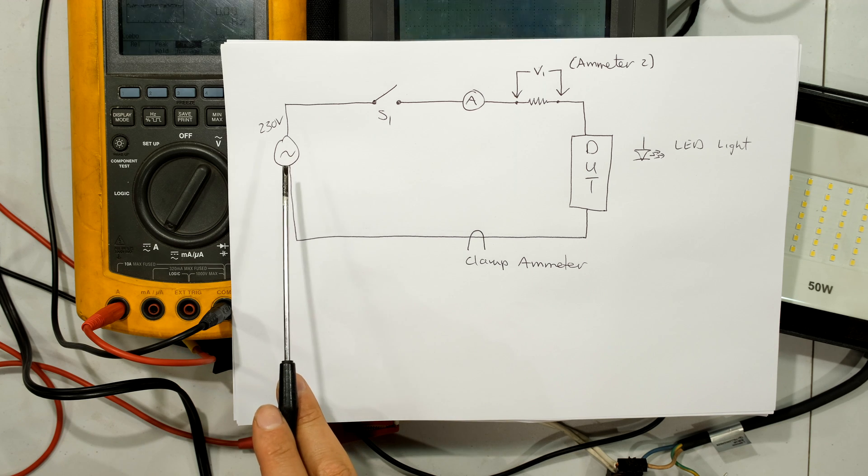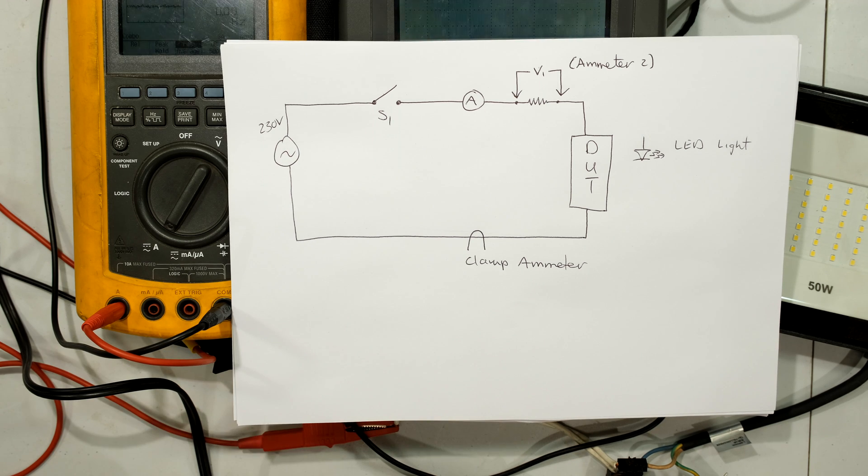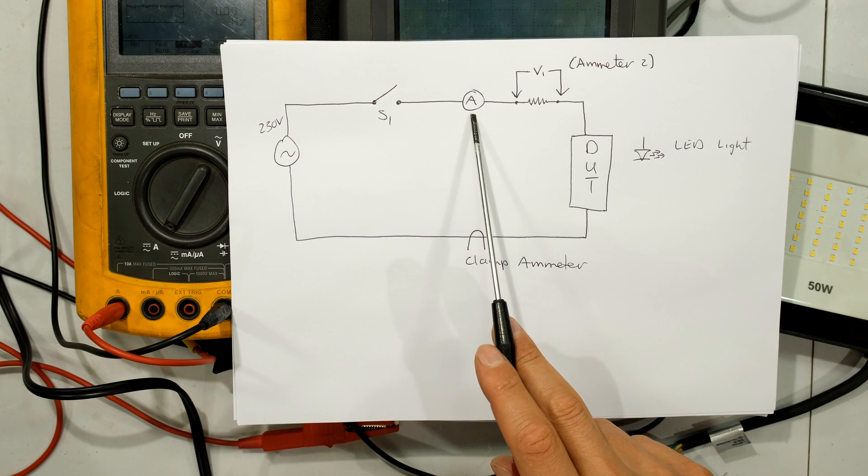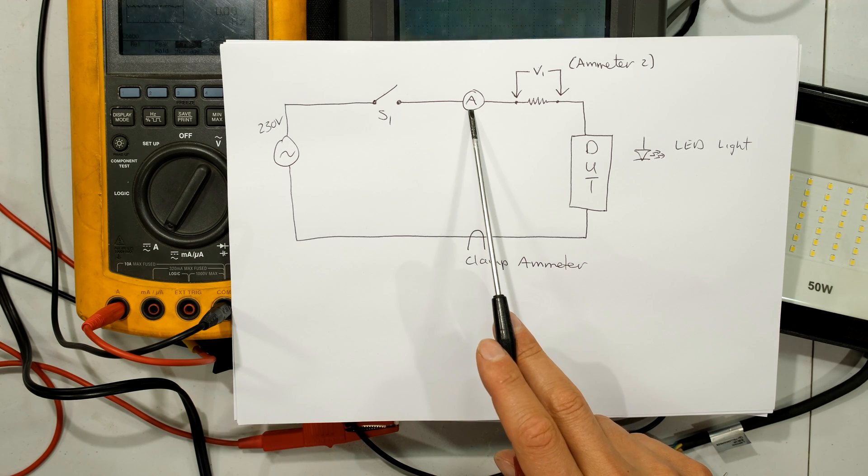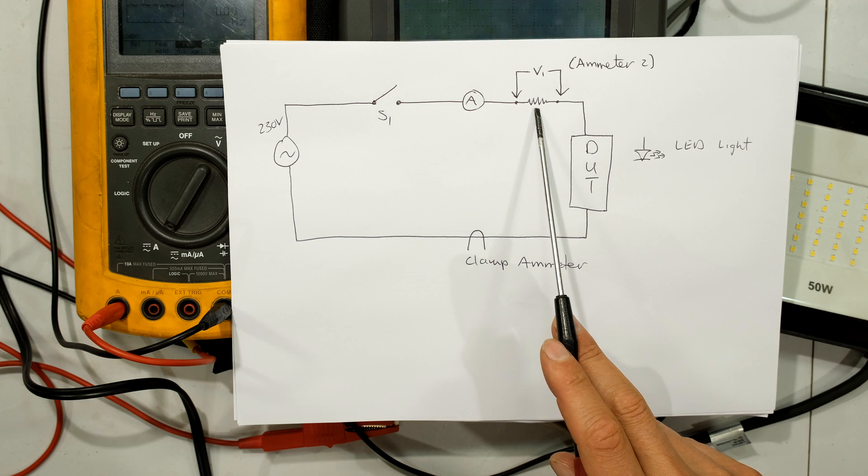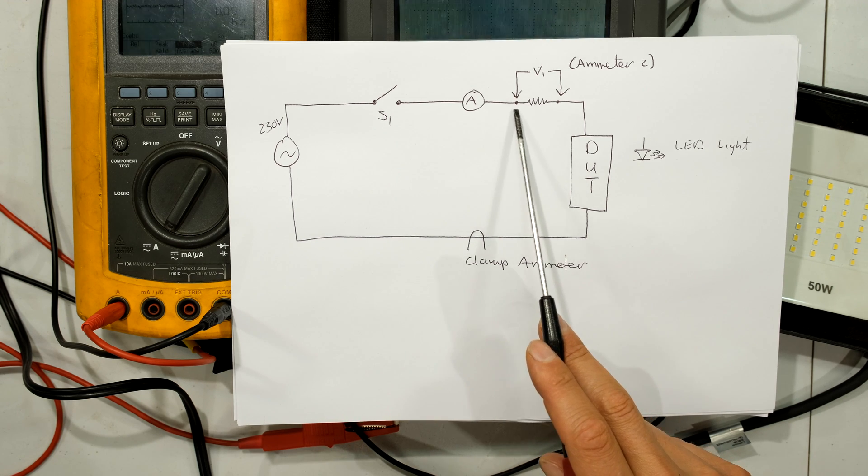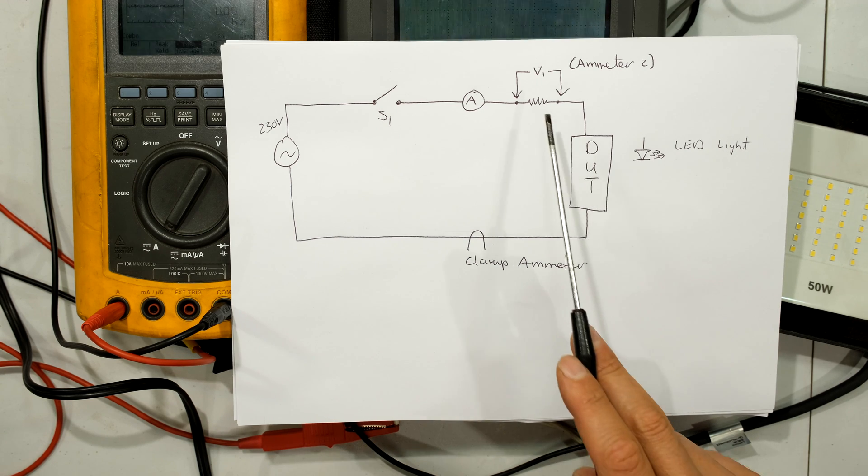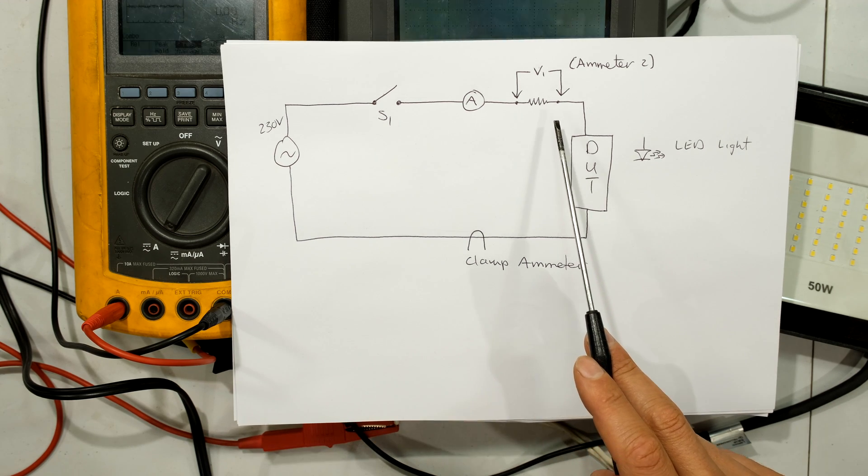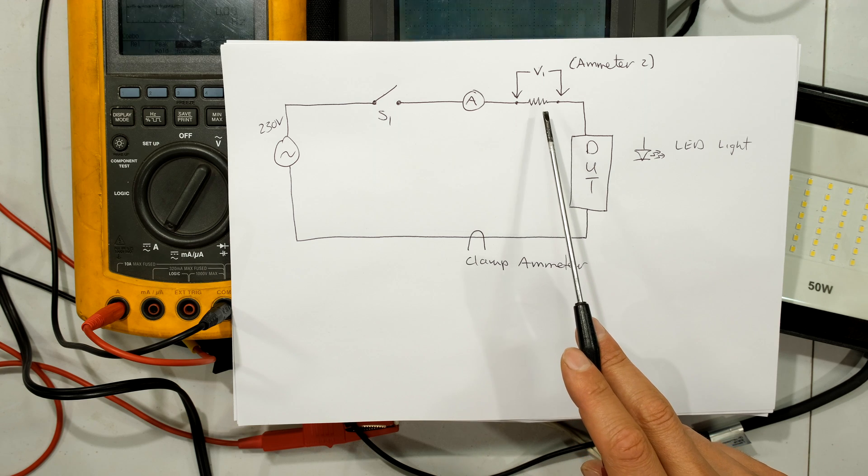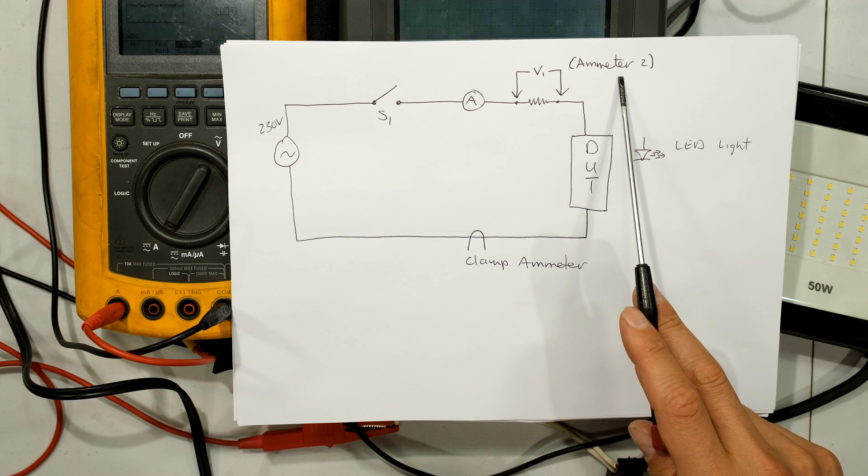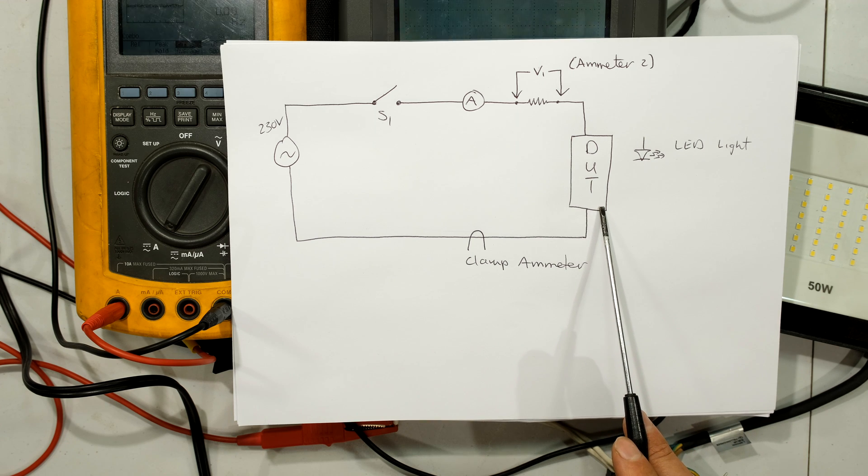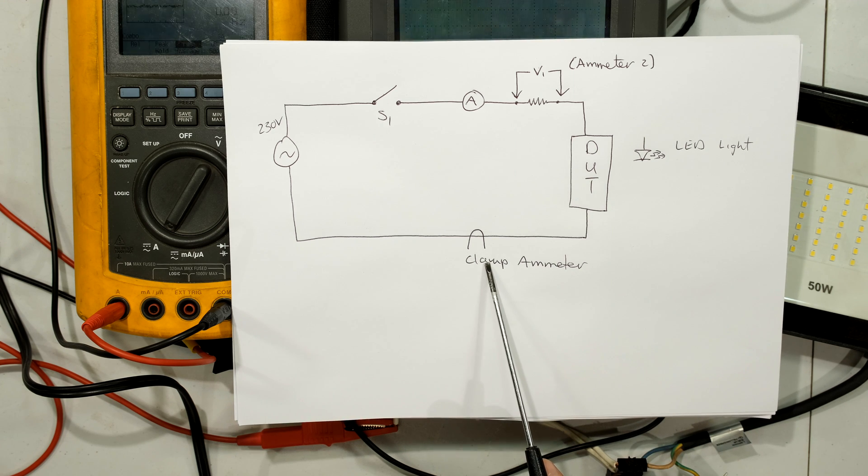I have a 230 volt supply, then a switch, then an ammeter connected inline, and then a little 1 ohm resistor in series with my 50 watt LED light. The reason I have this is because I wanted to scope out the voltage over the resistor to get a second ammeter reading, and then I have my 50 watt LED floodlight and a clamp on ammeter.